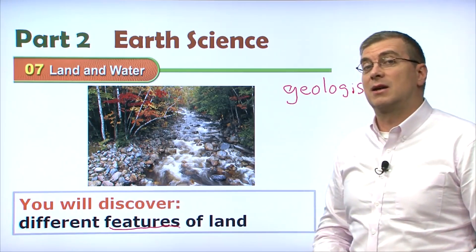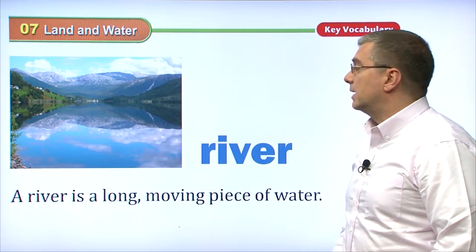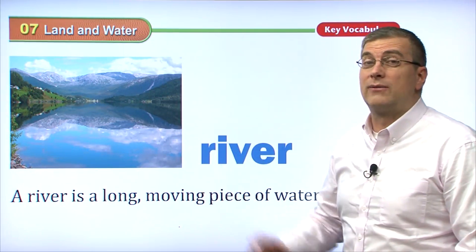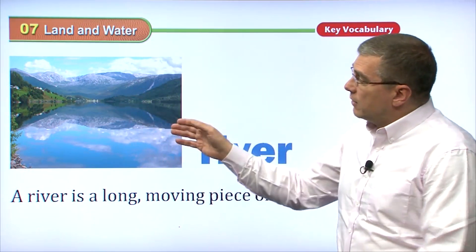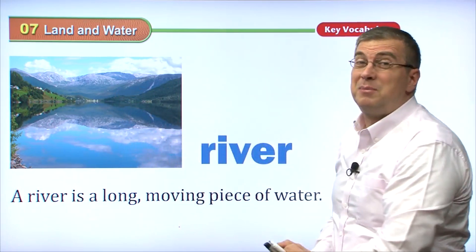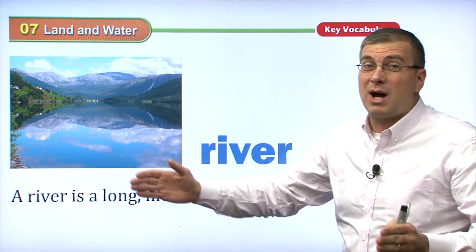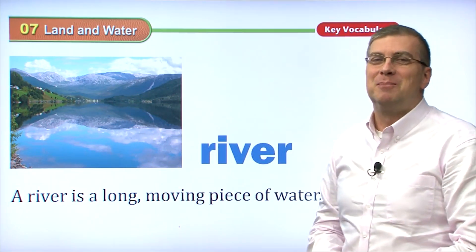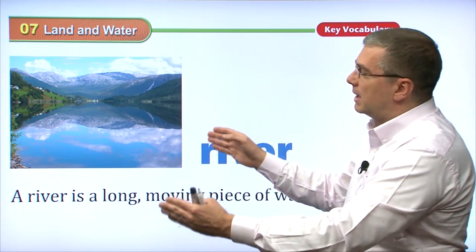Let's take a look at some of these different features. First of all, let's take a look at one interesting feature — it's a river. This is a good picture of a river. Rivers can be very wide. Especially the Mississippi River in America is really wide. The Mississippi River is very wide.